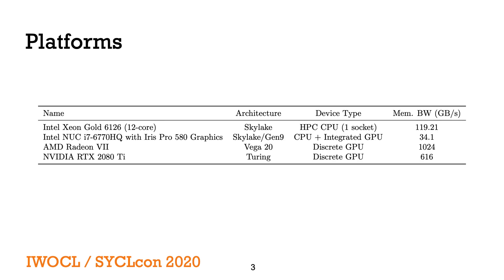I'll just show this slide quickly. Here are the feeds and speeds of the different processors we're using. The theoretical peak memory bandwidth is in the far right column. We're not comparing processors against each other to see which one is faster, so we'll always compare relative to the expected performance on each device in turn.